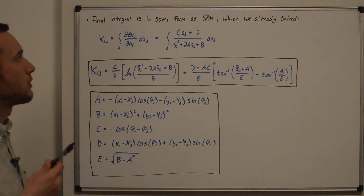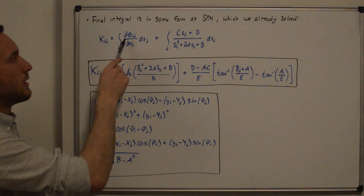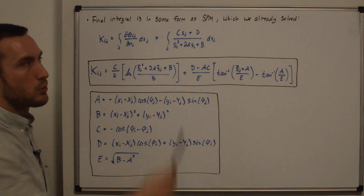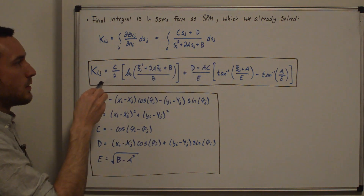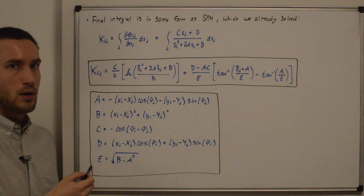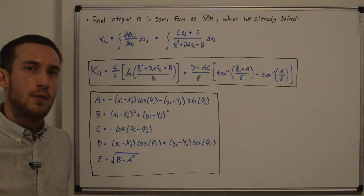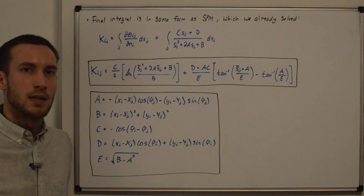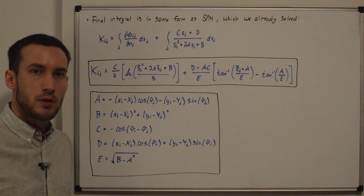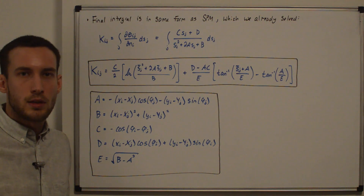The result for k_ij — the geometric integral for the vortex panel method normal velocity — is shown here, with the same solution form as all other geometric integral derivations, using variables A, B, C, D, and E. Now that we've derived k_ij, two more videos are needed: l_ij for the tangential velocity derivative, and n_x and n_y for the streamline geometric integrals in x and y. After those, we'll assemble the system of equations and code up the vortex panel method to examine airfoil results. Thanks for watching.